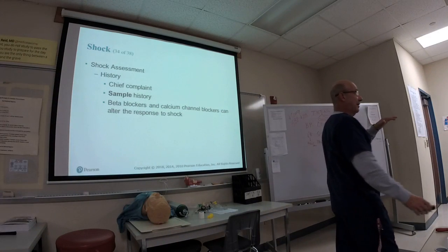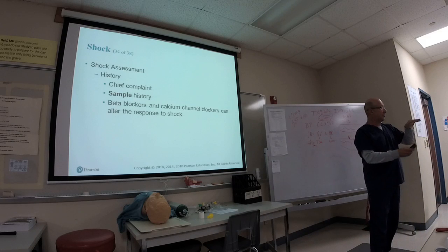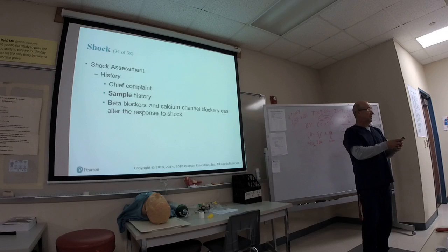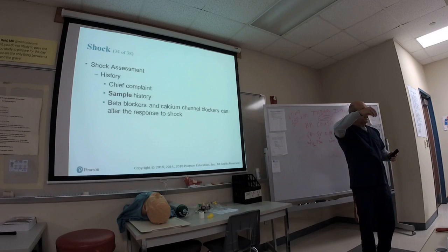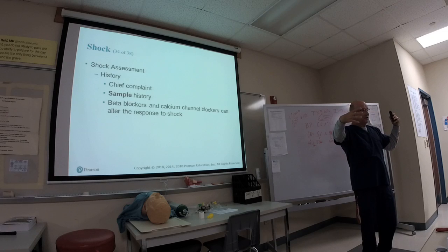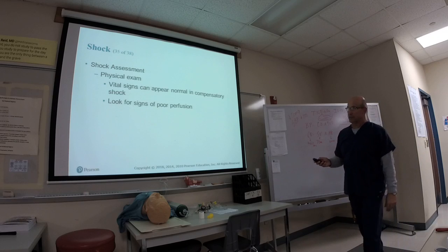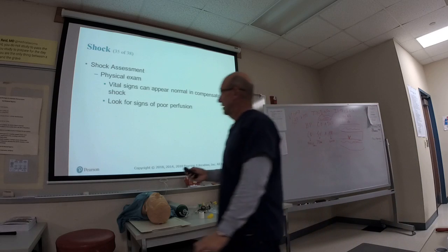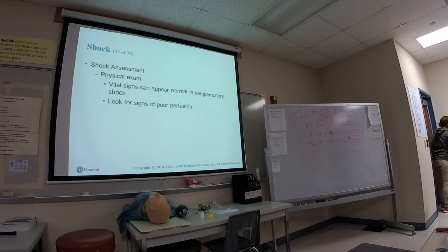Calcium is critical for muscle contraction of the heart — it extends the contraction. Without it, you don't get that expanded contraction. Do a good physical exam and vital signs, and look for signs like pale, cool, clammy skin — except in neurogenic shock. In neurogenic shock, the patient will be bradycardic with warm skin, because vessel dilation pushes blood toward the skin.